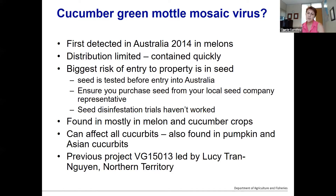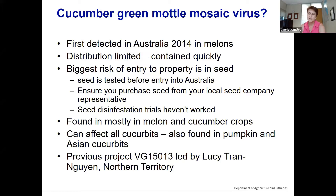CGMMV has been found in a few other cucurbit crops — in pumpkin and Asian cucurbits. That was found in the first project led by Lucy Tran-Nguyen up in the Northern Territory, and that project really provided a lot of the basis of the information that we know about CGMMV.